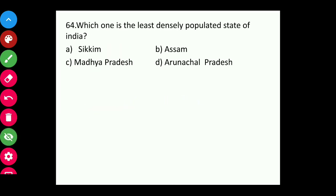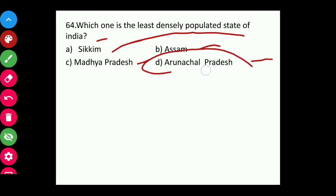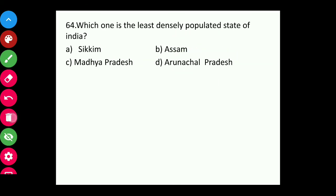Question sixty-four: Which is the least densely populated state of India — Sikkim, Assam, Madhya Pradesh, or Arunachal Pradesh? The answer is Arunachal Pradesh.